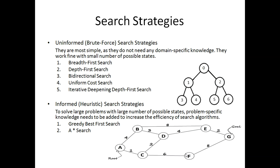Uninformed search is also called brute force or blind search strategy, while informed search is called heuristic search strategy. Uninformed search strategies do not need any domain-specific knowledge. As you can see in this diagram, if zero is the starting state, the agent has no specific information to decide whether it should move to node one or node two. They work fine with a small number of possible states, but with a large number of states they are generally not recommended because they are blindly following a path.